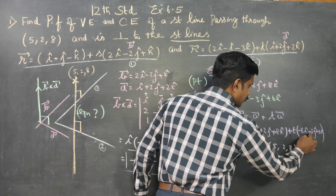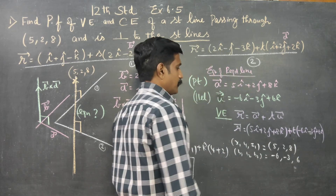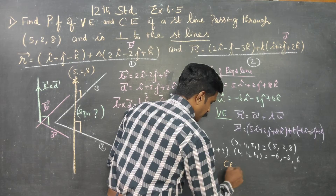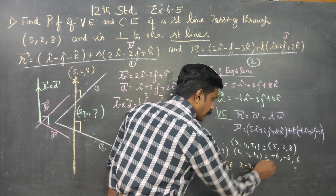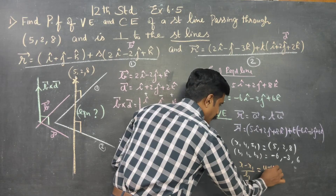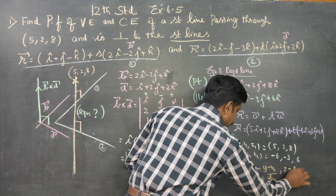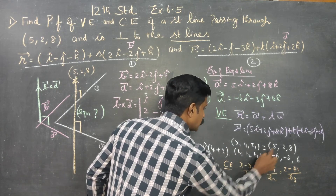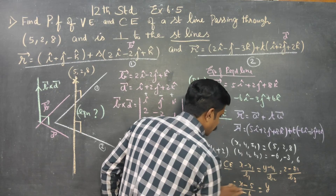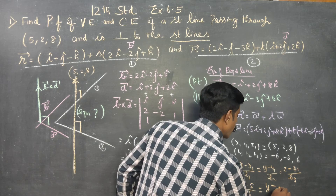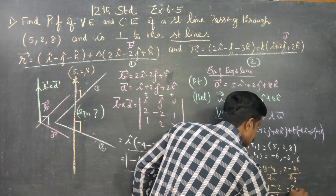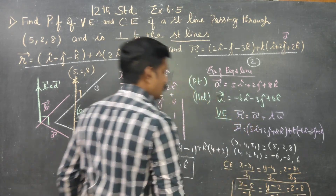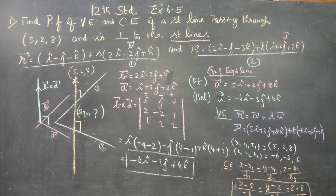The parallel direction vector values are minus 6, minus 3, and 6. The Cartesian equation formula is: (x minus X1) by B1 equals (y minus Y1) by B2 equals (z minus Z1) by B3. Therefore the final Cartesian equation is: (x minus 5) by minus 6 equals (y minus 2) by minus 3 equals (z minus 8) by 6. This is the Cartesian equation.